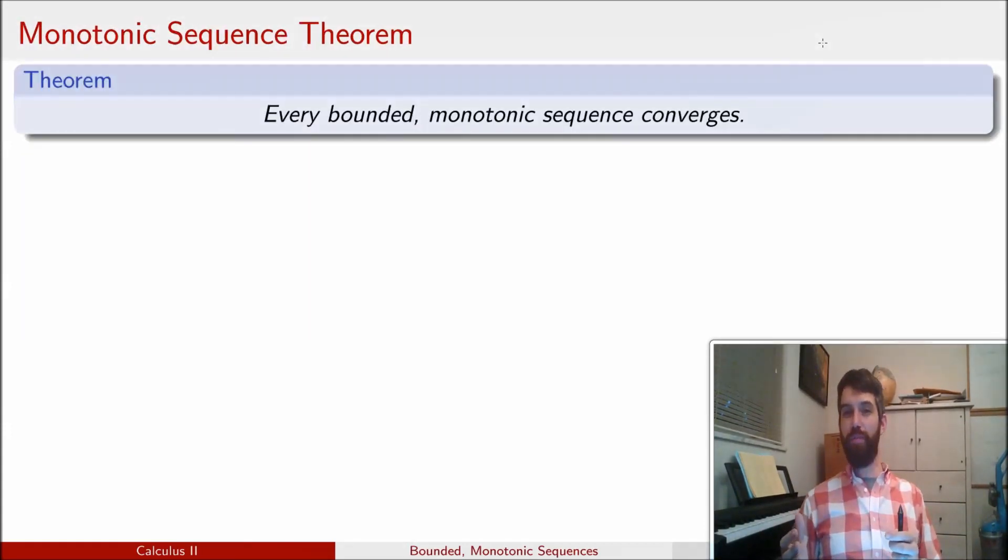And then we get this very powerful theorem, the monotone sequence theorem, that tells us that both of the properties are true. If our sequence is both bounded and monotone, then we're going to have it being convergent. In other words, we're able to translate the question of does some particular sequence converge to a test: Is it bounded? And is it monotone? And if the answer to both of those questions is yes, then it must converge. And note that I'm not claiming what it converges to, we don't know that. I'm merely claiming that it must converge.